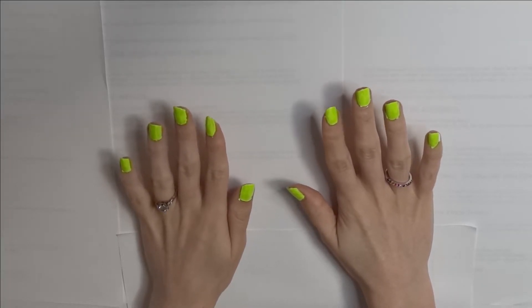So after one coat these nails look pretty much highlighter yellow. After two coats they still look pretty close to highlighter yellow. They're a little bit more green and I think we're just going to go with it. I think it's slimy enough to work.